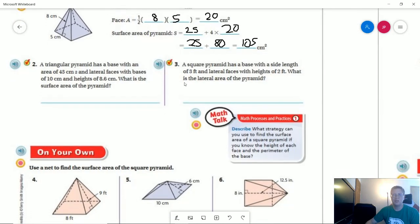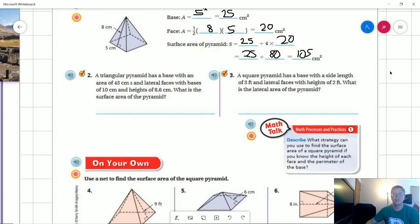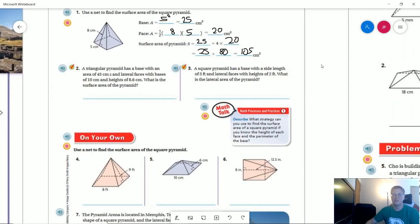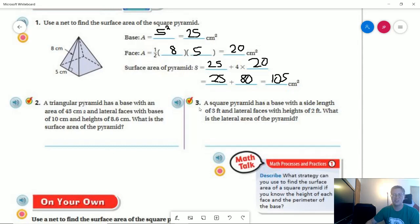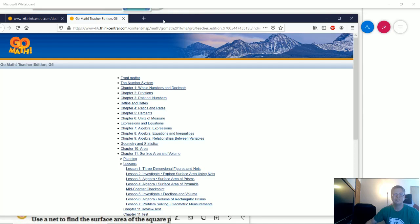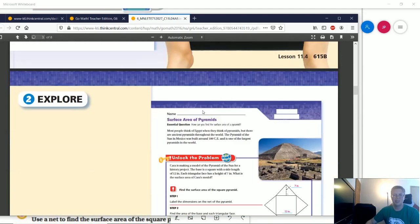So number three, we have a square pyramid with a side length of three feet and lateral faces with heights of two feet. So we want to know what is the lateral area of the pyramid. So the lateral area I think is just going to cover the amount that we want for the lateral surfaces. I'm going to pause real quick and double check something to make sure that I don't make a mistake when I am doing this.